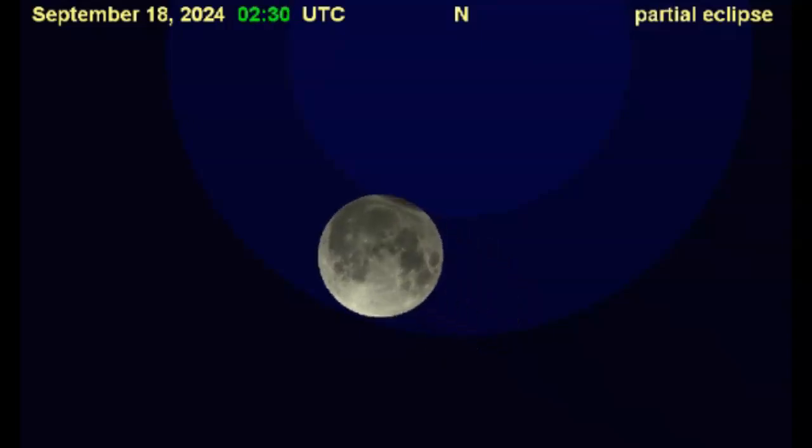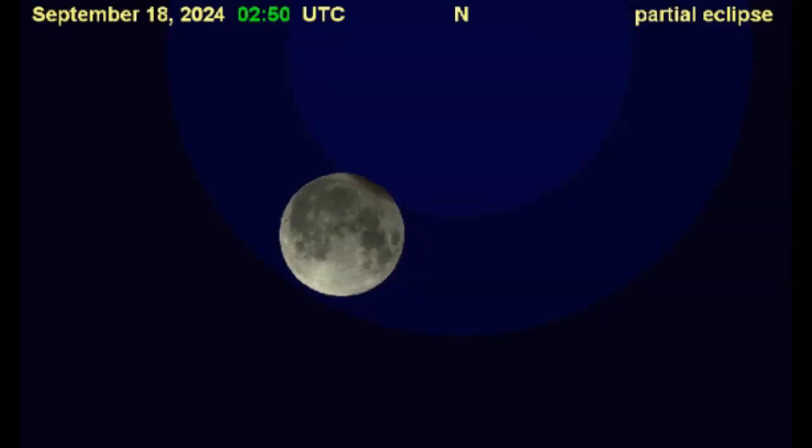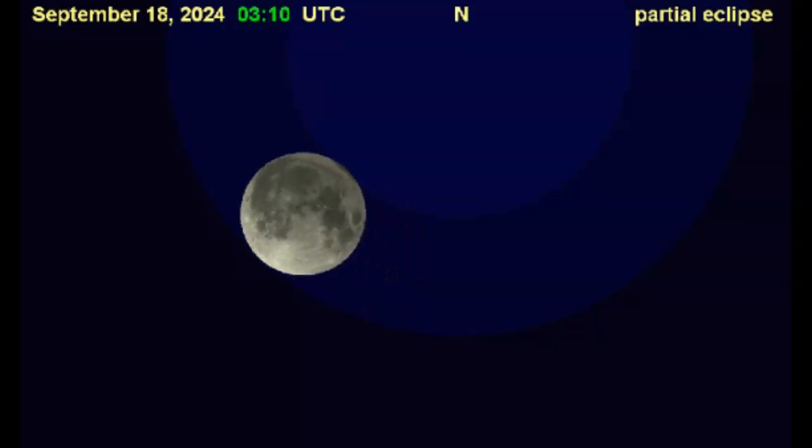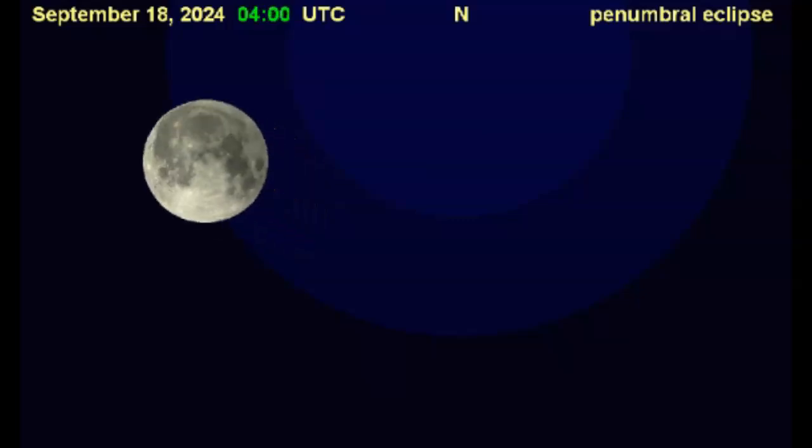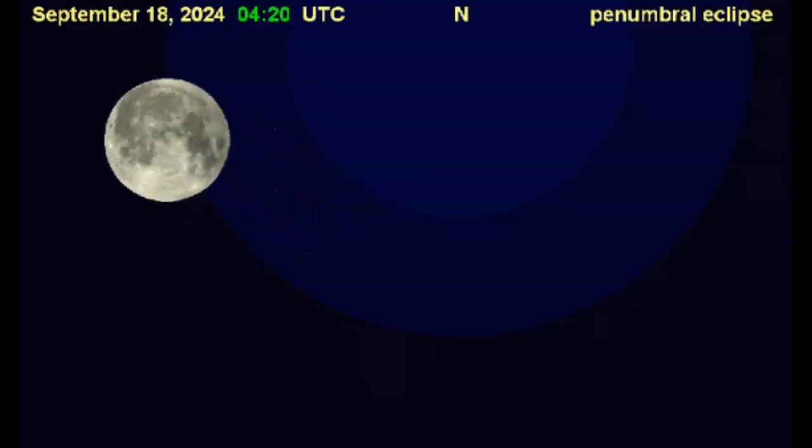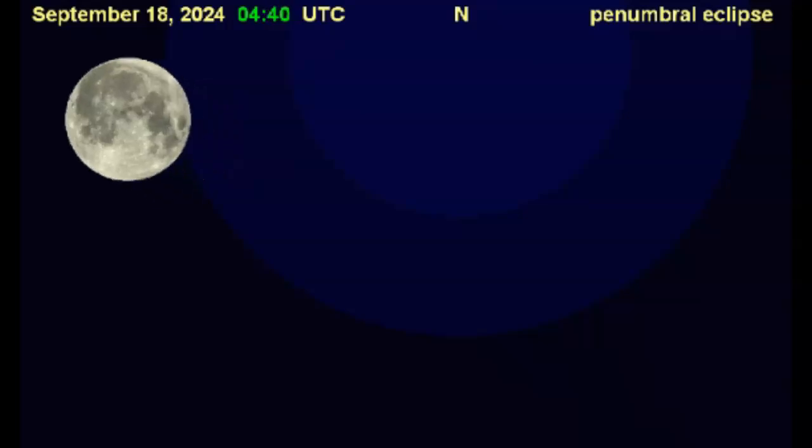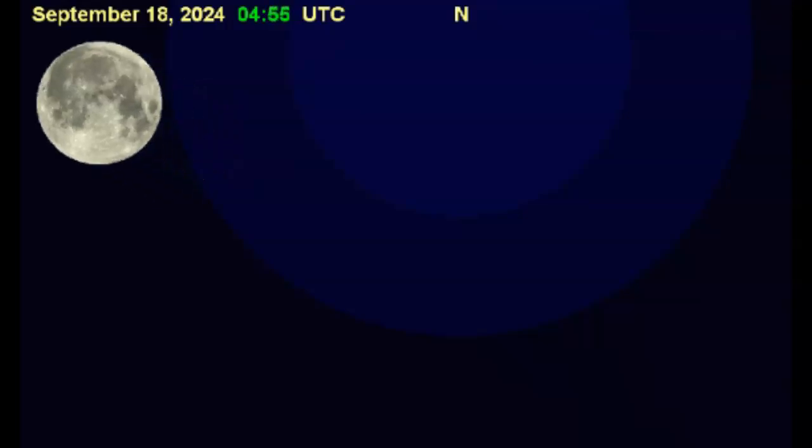Mainstream media stories are trumpeting this as a supermoon eclipse. Indeed it is a supermoon, also known as a perigee moon. The moon's orbit is an ellipse with one side, perigee, about 50,000 kilometers closer than the other side, apogee.